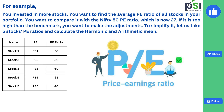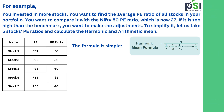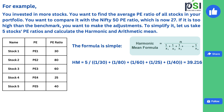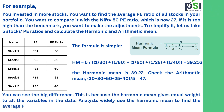Stock 1 PE ratio is 30, Stock 2 is 80, Stock 3 is 60, Stock 4 is 25, and Stock 5 is 40. The harmonic mean formula is: N divided by (1/X1 plus 1/X2 plus 1/X3 and so on). Calculating for these 5 stocks, the harmonic mean is 39.216. The arithmetic mean is: 30 plus 80 plus 60 plus 25 plus 40 divided by 5, which equals 47. There is a huge difference between arithmetic mean and harmonic mean because harmonic mean gives equal weight to all variables in the data.